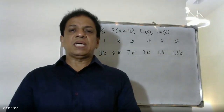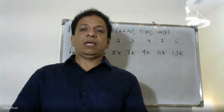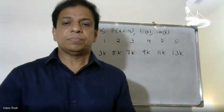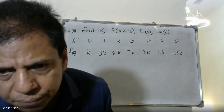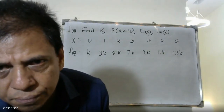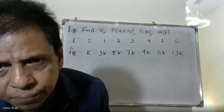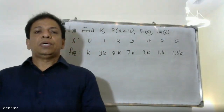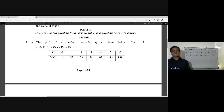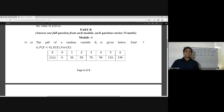Good morning, friends. The PDF of a random variable X is given below. Find: (a) k, (b) probability of X less than 4, (c) expectation of X, (d) variance of X.